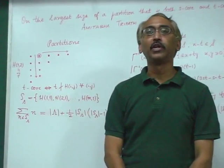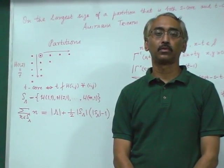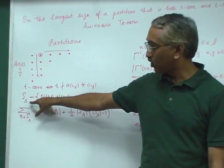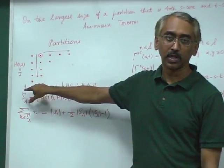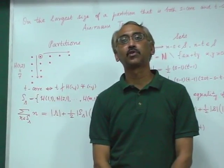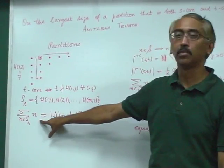The partition is called T-core precisely when T doesn't divide any of the hook numbers. The structure numbers of a partition are the hook numbers of the first column. They're given that name because from the set of structure numbers you can deduce the partition itself by this formula.